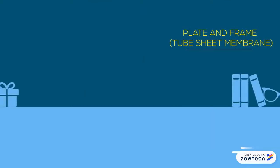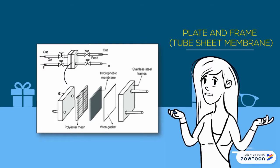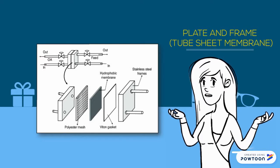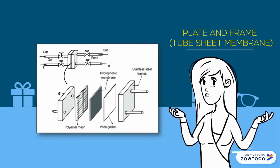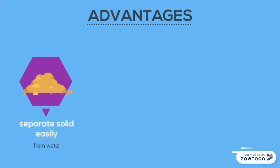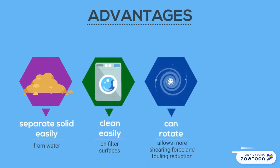Plate and frame membranes, also known as flat sheet membranes, utilize membranes laid on top of a plate-like structure held together by a frame-like support. Flat sheet membranes are bolted together with a frame around the perimeter. They work on the basic principles of cross-flow: feed enters on one side of the plated membrane, concentrate collects on the other end, and permeate travels through the membrane and collects on the inside of the supporting plate. Advantages include easy separation of solids from water, easy cleaning of filter surfaces, and certain configurations allow the plate and frame to be rotated for more shearing forces and fouling reduction.